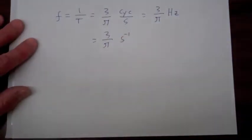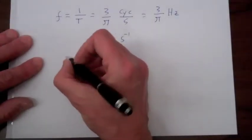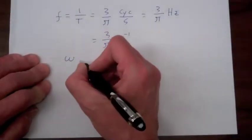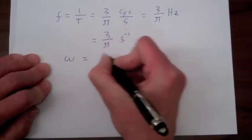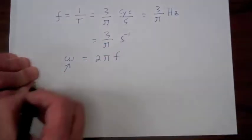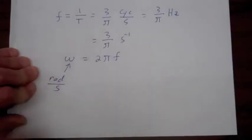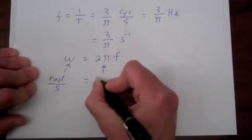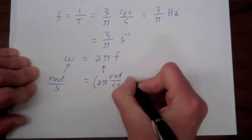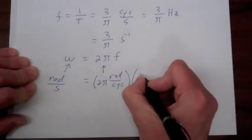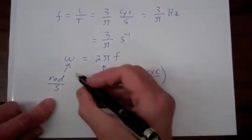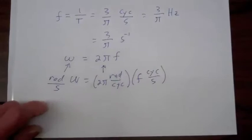It will be much more convenient to work in radians per second instead of cycles per second. The symbol for the frequency in radians per second is omega, which is equal to 2π times the frequency. So omega in radians per second equals 2π radians per cycle times the frequency f in cycles per second.